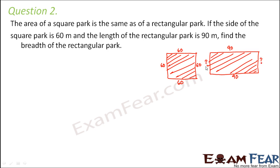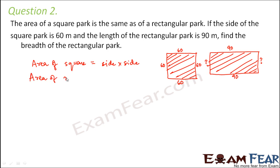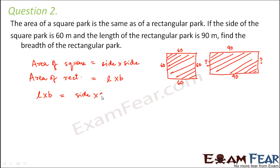Find the breadth of the rectangular park. The area of a square is equal to side × side, and the area of a rectangle is length × breadth. Since the areas are equal, length × breadth = side × side. The length of the rectangle is 90 and the side of the square is 60.